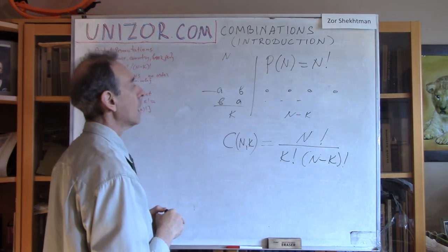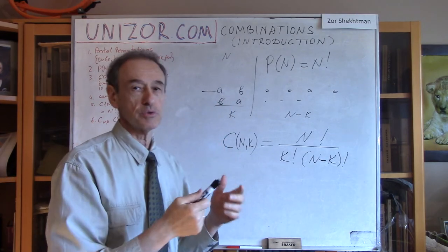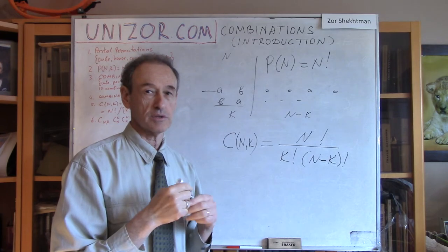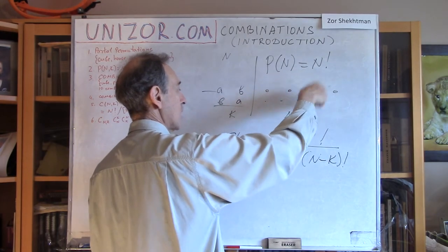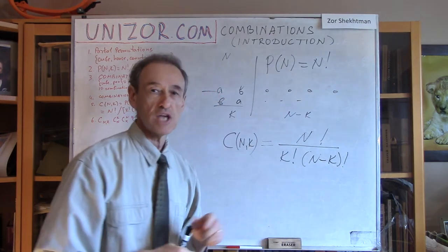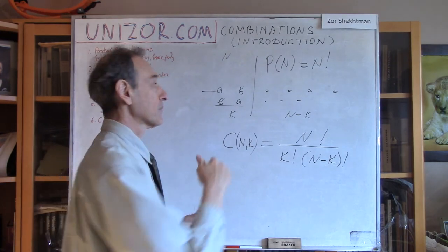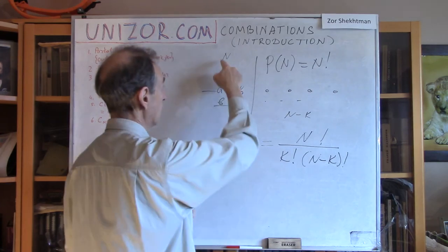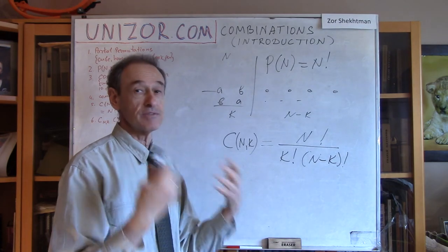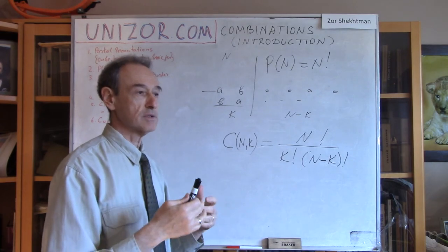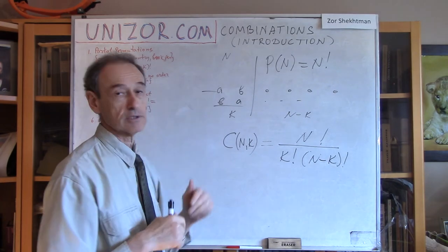So how many times did I count the same combination of A and B using this process? It's easy to count: all permutations within the left part do not produce a different combination — they produce exactly the same. What's more, if I'm changing places only within the right part — the tail — I also don't change what's on the left. So out of all the permutations I have — n factorial — I have to divide by how many different ordered sequences produce exactly the same subset on the left.